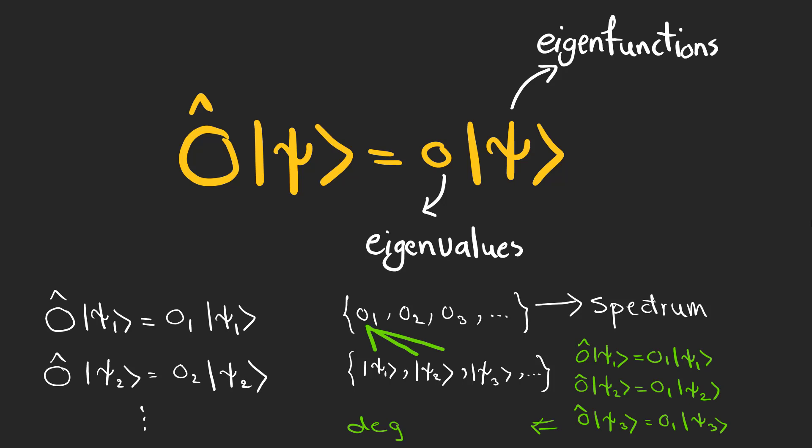Sometimes there are two or more functions with the same eigenvalue. These spectrums are called degenerate.